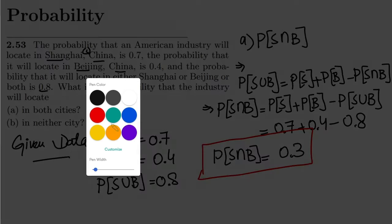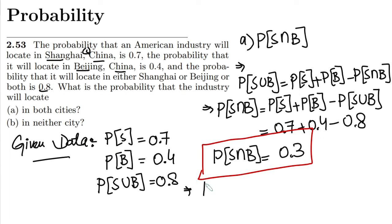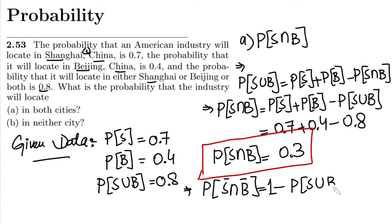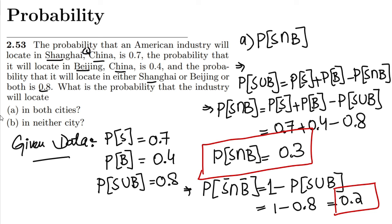For part B — neither city — we need the probability that the industry is neither in Shanghai nor in Beijing. This is the complement of the union, so it equals 1 − P(S∪B) = 1 − 0.8 = 0.2. That is the solution to part B.